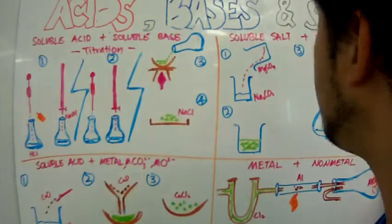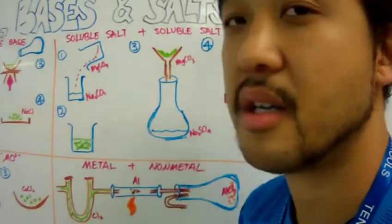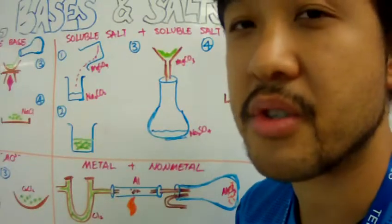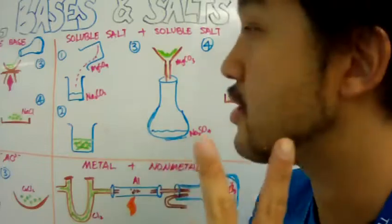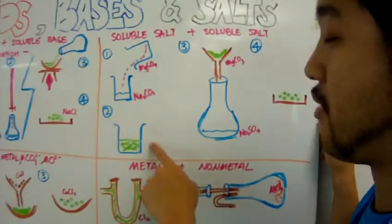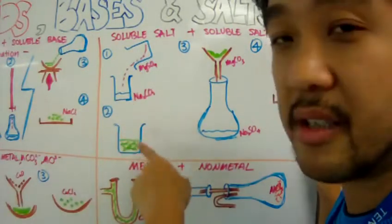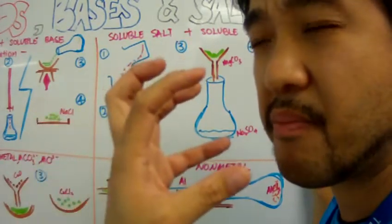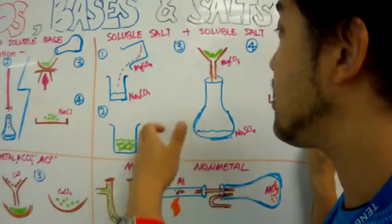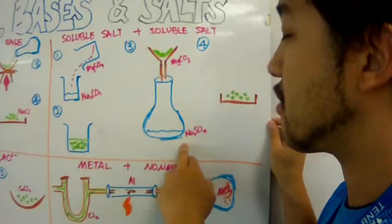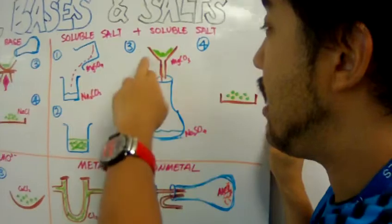The next method of making salt is to make an insoluble salt. This time you have two soluble substances or salts. You will mix them together and what you get is a precipitate, a very murky, whatever color precipitate. That precipitate you can filter it out. The waste salt is collected here and your desired salt is up here as the residue.